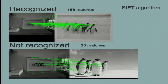In this slide I show an example of an image recognized and one not recognized. We can see that the number of matches is significantly different. For this example I used the SIFT algorithm.